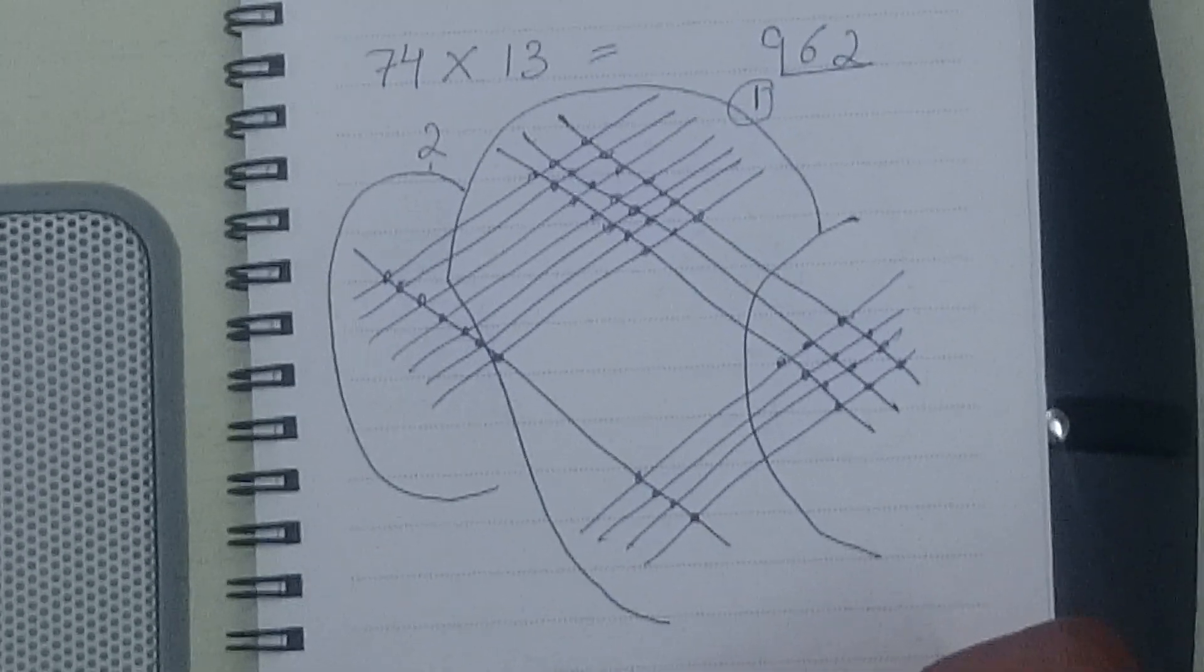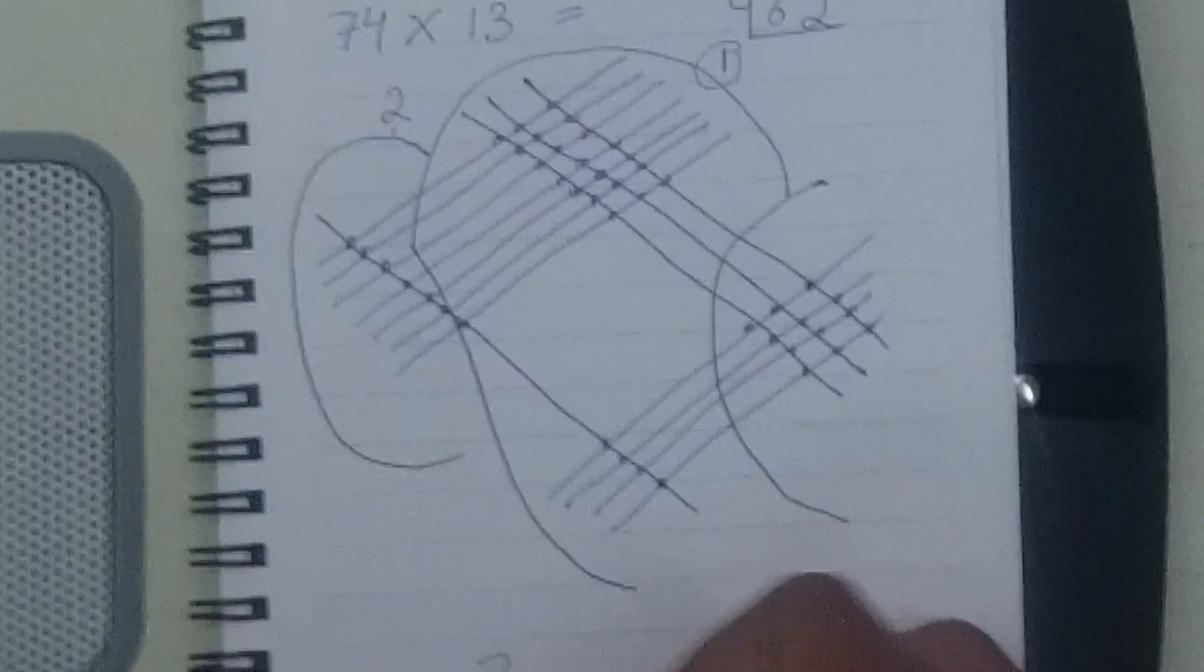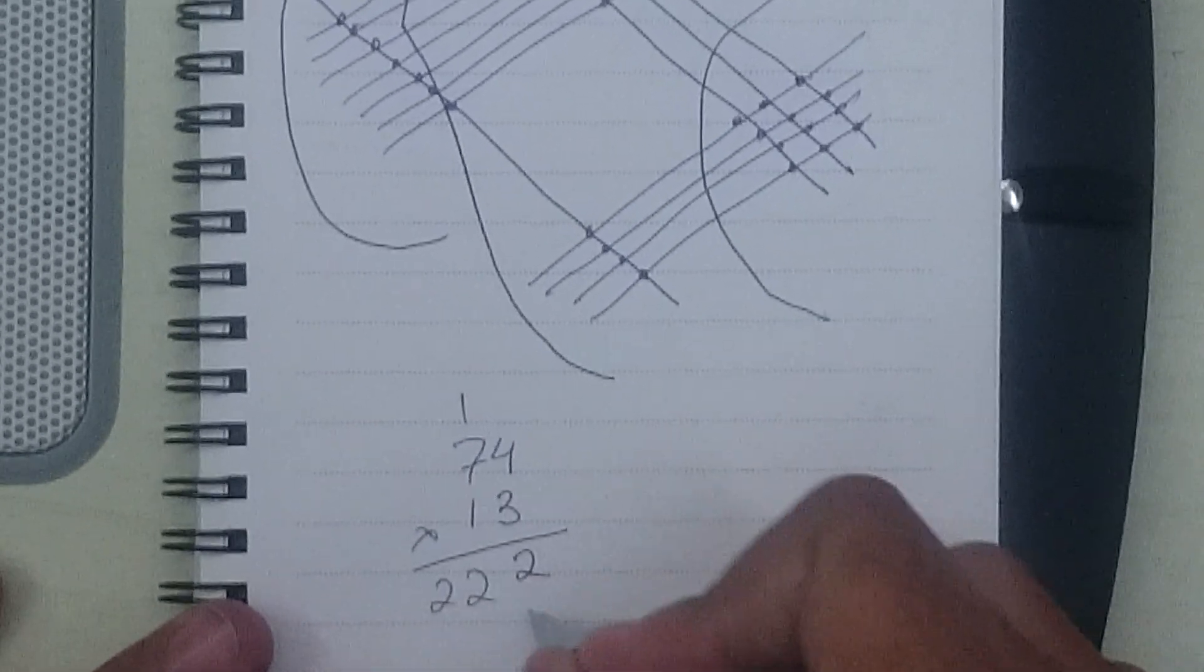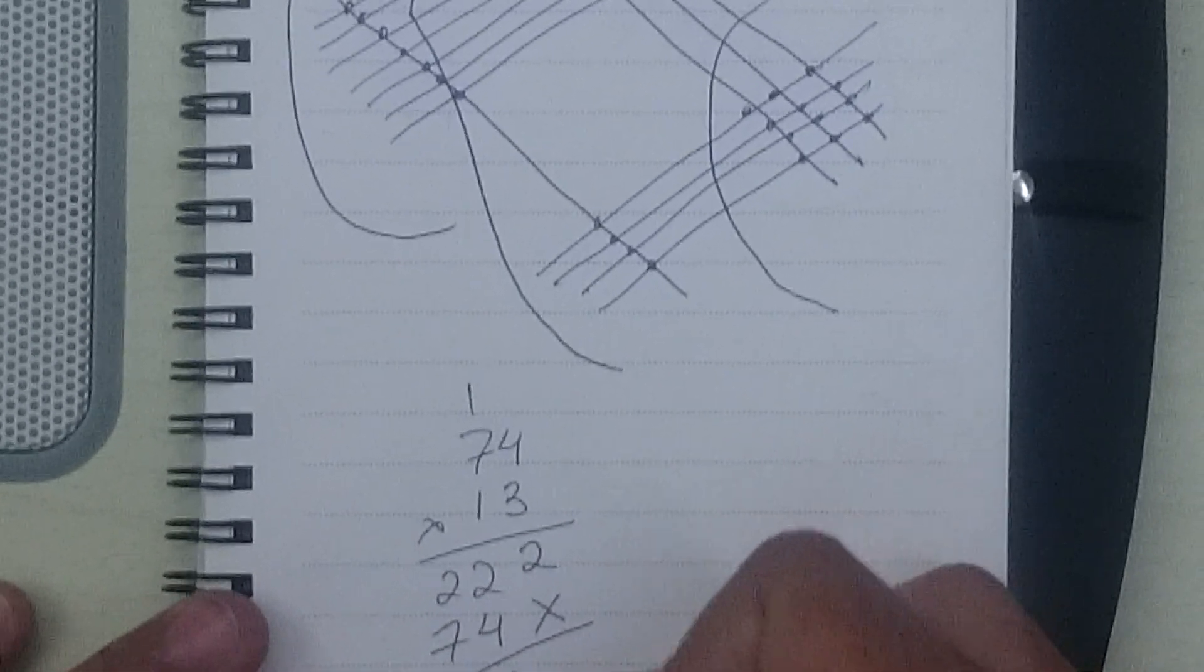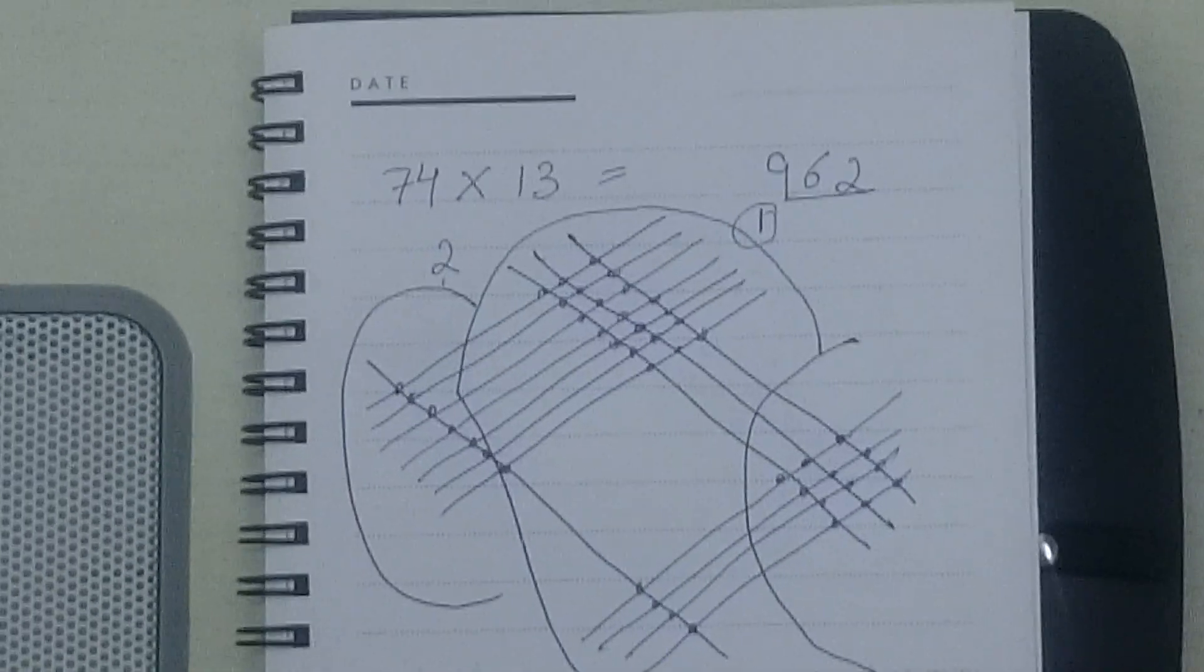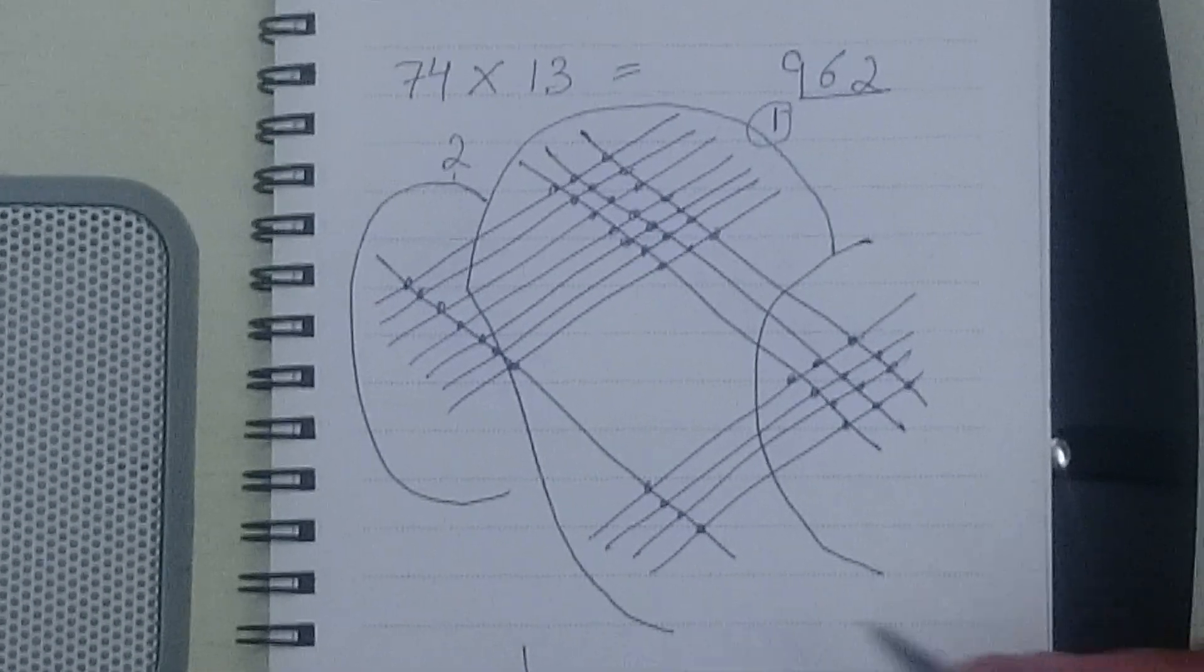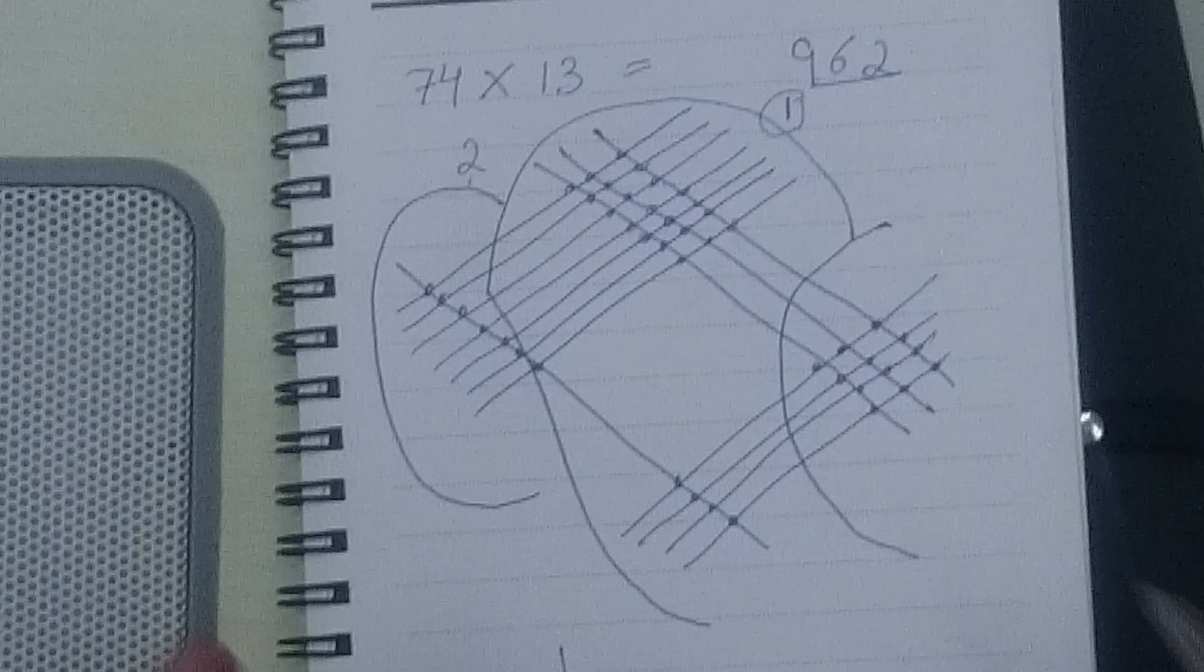Absolutely perfect. Doesn't that work like a charm? So this is a technique which you can use to multiply two digits or even three digits of numbers. Just have to be careful about the intersections and this works like a charm. This is a Chinese technique which is very popular in the country of China.